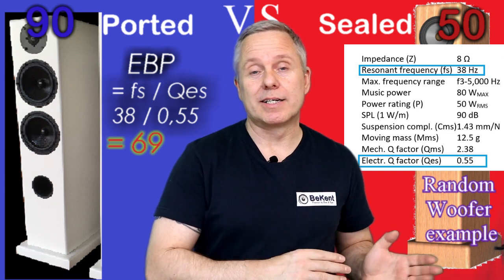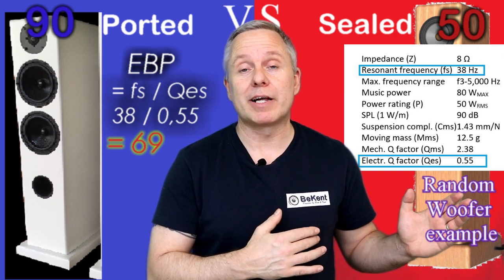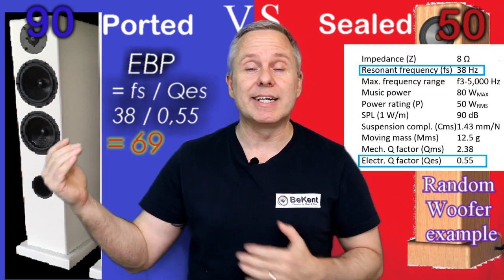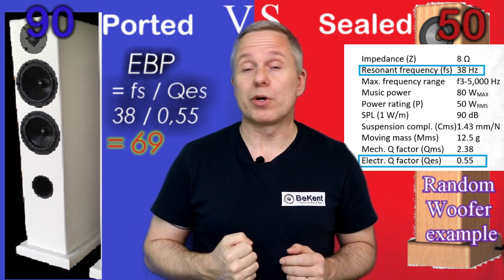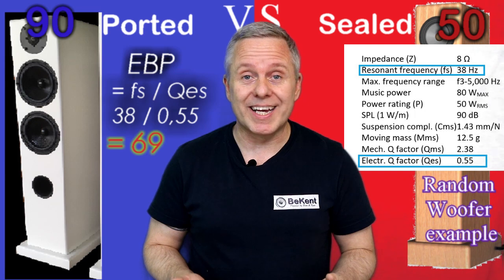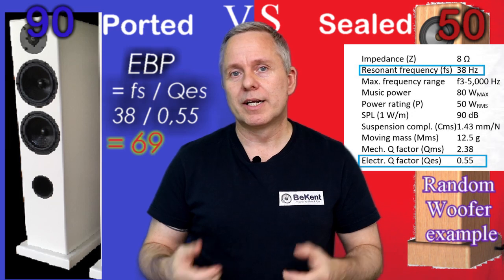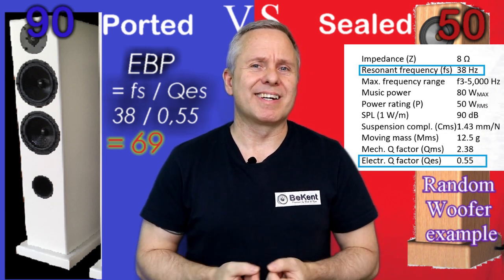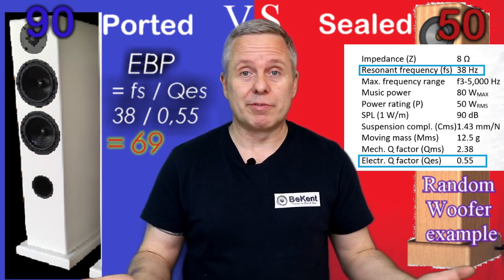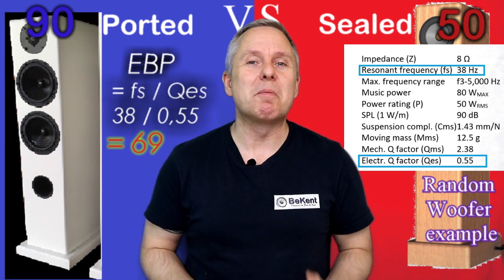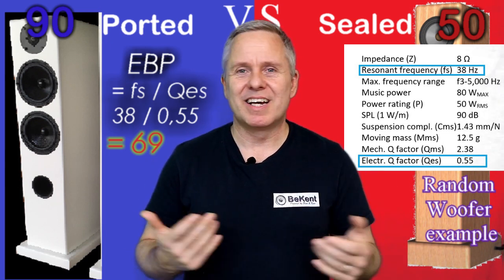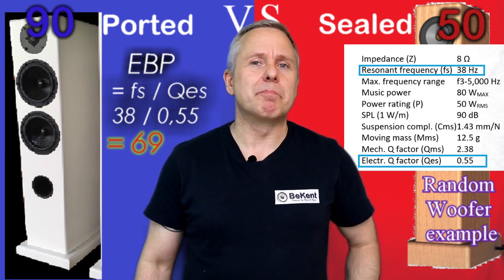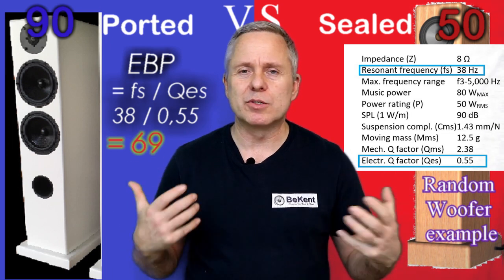If the EBP value came out around 55, you really want to choose the closed box. If you go against that value — say, choosing a ported box with an EBP of 55 — the bass will very likely be muddy, imprecise, and lingering. One bass note will fall over the other, giving you a muddy perspective rather than firm bass with nice nuances.